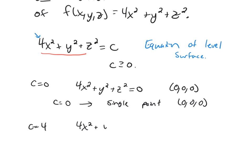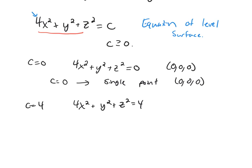4x squared plus y squared plus z squared equals 4. If I divide by 4, I'm going to get the equation x squared over 1 plus y squared over 4 plus z squared over 4 equals 1. This is the equation of an ellipsoid.